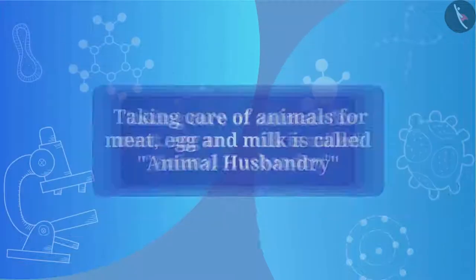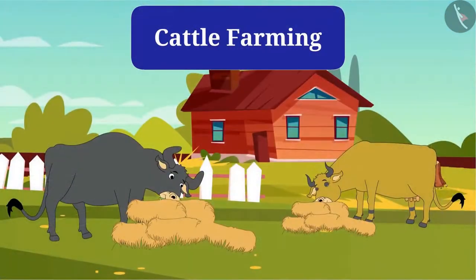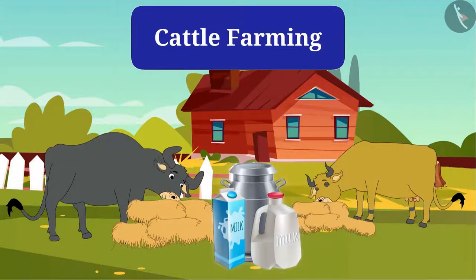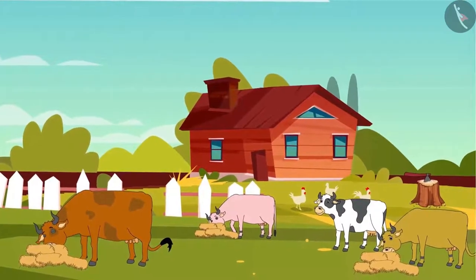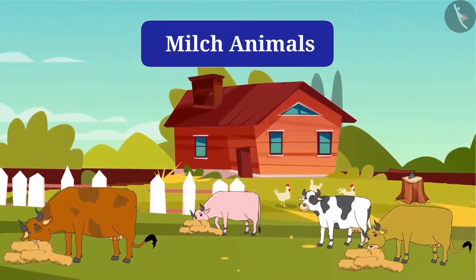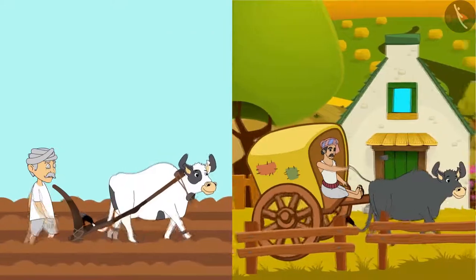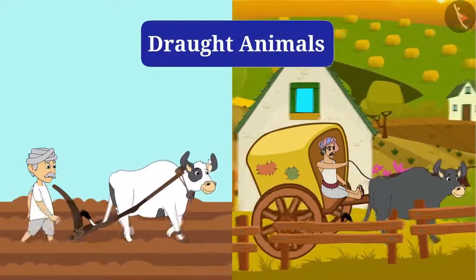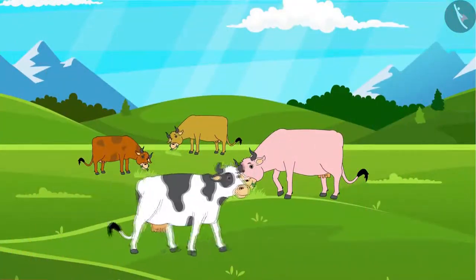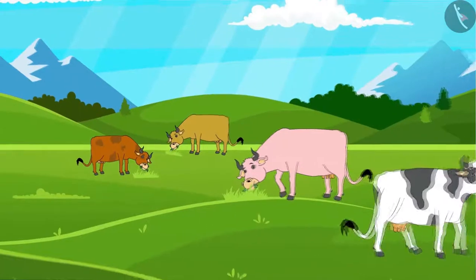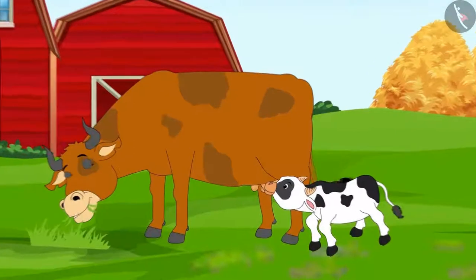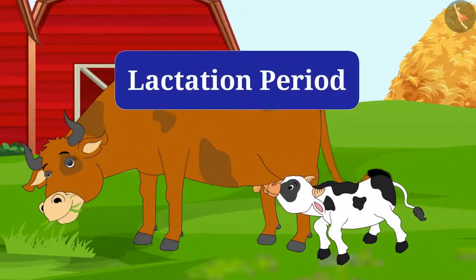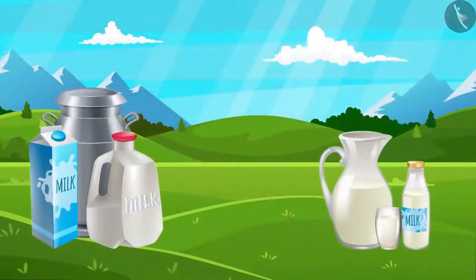Let's know about animal husbandry in detail. First, cattle farming. From animals like cows and buffaloes, we get milk. They also help in plowing of fields and transportation. The female milking animals are called milch animals, and animals used for transportation and tillage are called draught animals. The female animal gives milk only after the birth of a calf, and that particular period is called the lactation period.